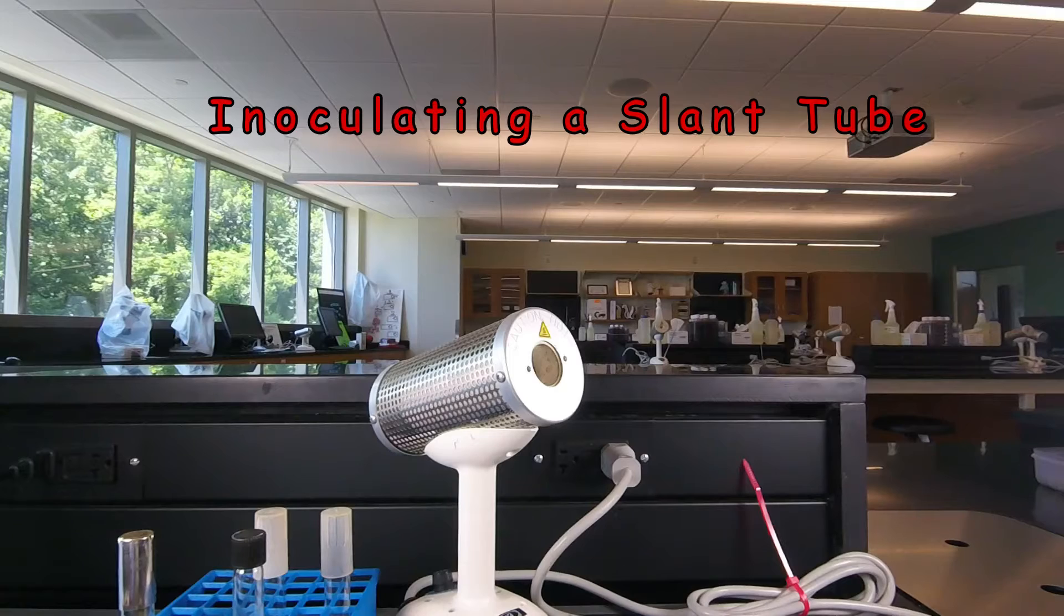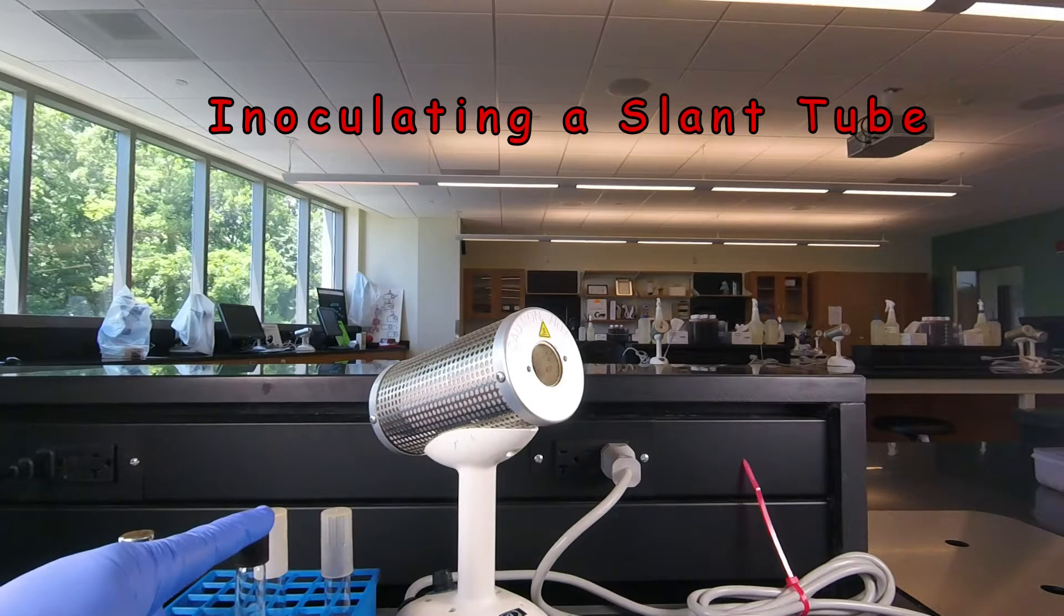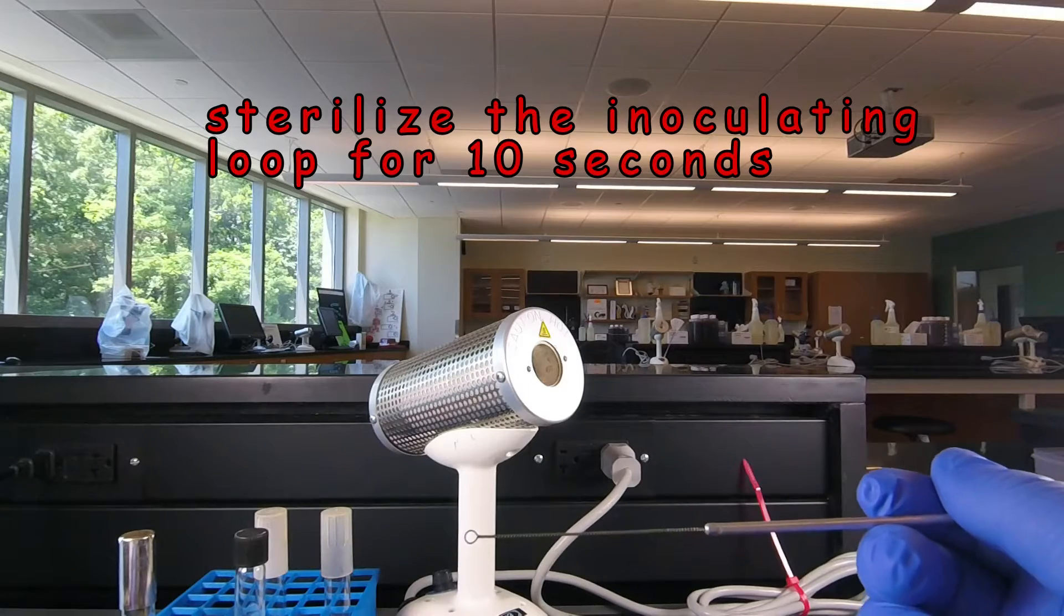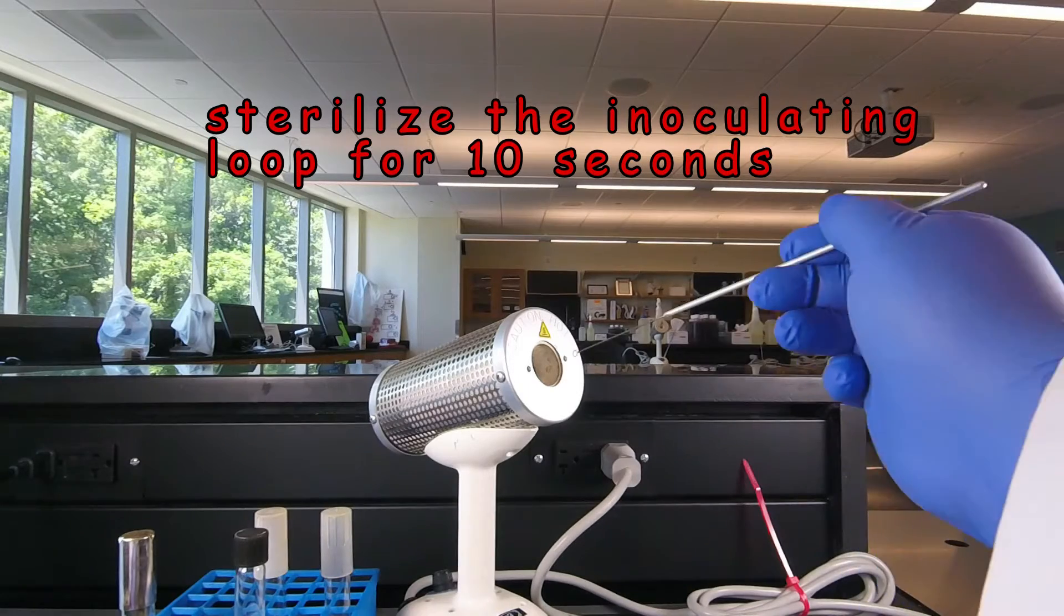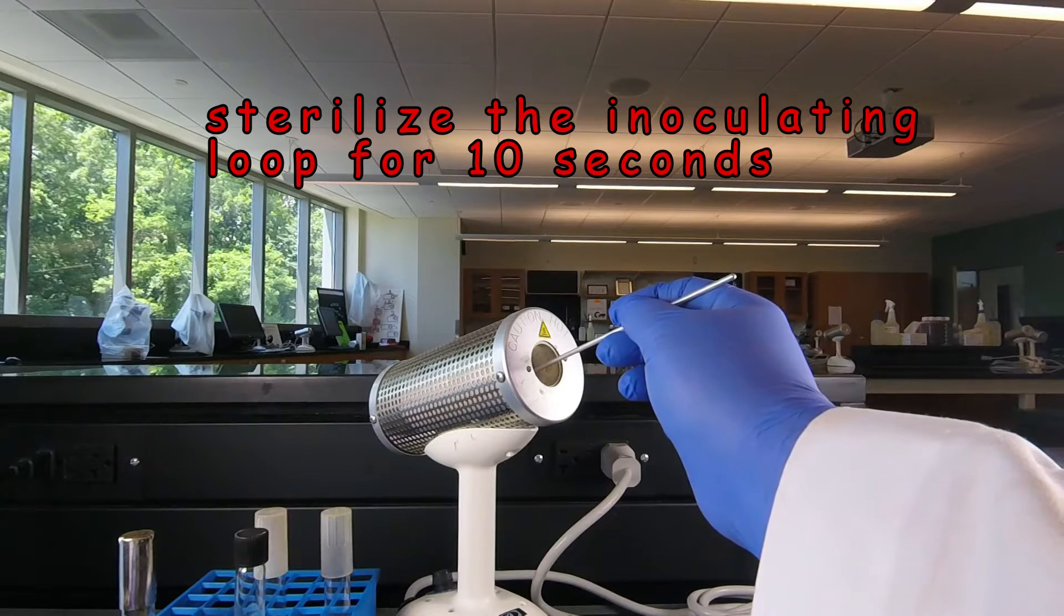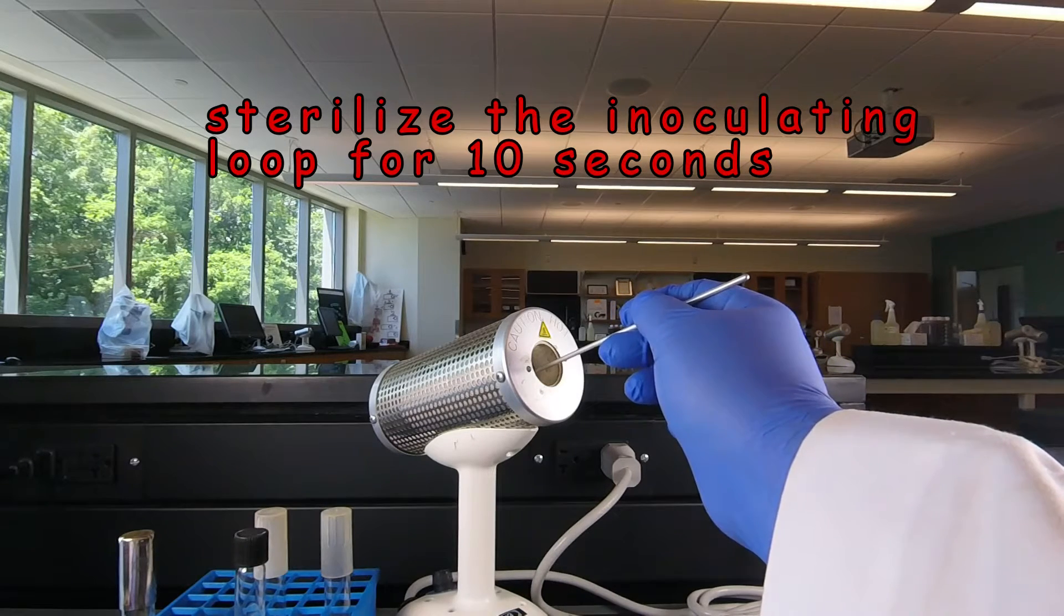We also want to grow our bacteria in a slant tube. So we start out the same way. We always sterilize the inoculating loop before we do anything. Put it all the way into the Bacto incinerator until the handle is just inside the glowing part. Ten seconds.